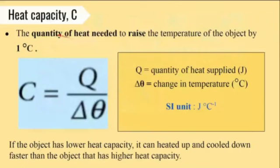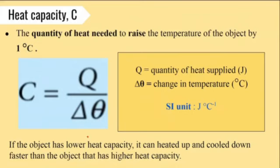Heat capacity is the quantity of heat needed to raise the temperature of the object by 1 degree Celsius. Look at this formula. Capital C is the heat capacity, Q is the quantity of heat supplied, and delta theta is the change in temperature. So, C equals Q over delta theta. Since Q is heat supplied, the unit for heat is the same as energy, which is Joules, and temperature is in degree Celsius. The SI unit for heat capacity is Joules per degree Celsius.